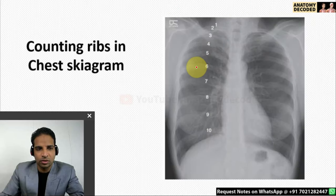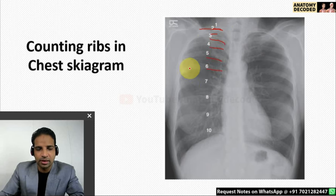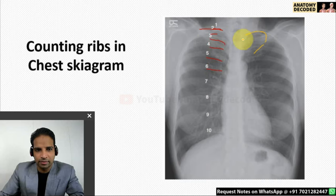There is a separate slide on counting of the ribs. The ribs are counted from posterior to anterior aspect — first rib, second, third, fourth, fifth, sixth. We should count from posterior to anterior aspect.